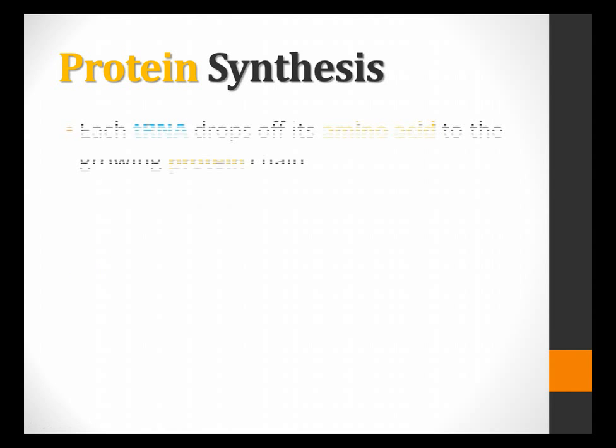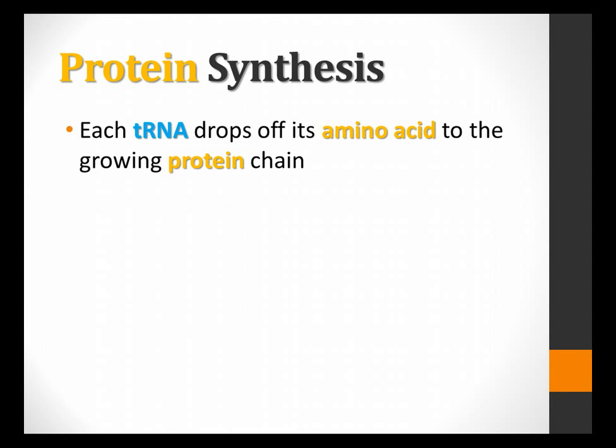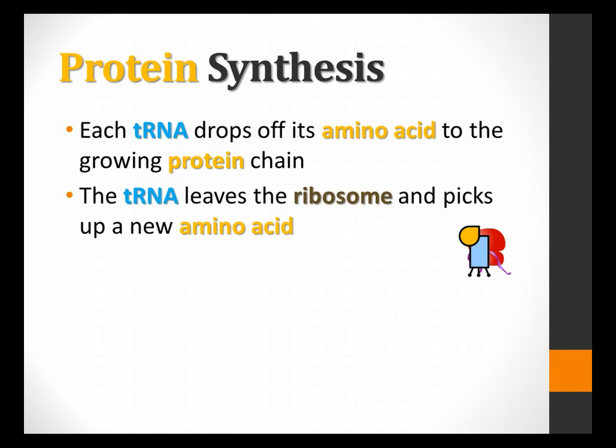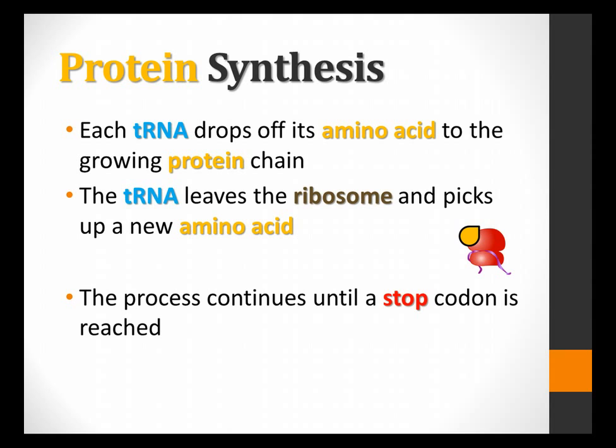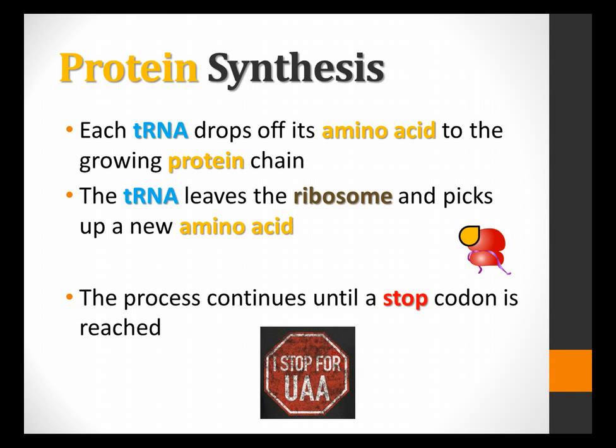Protein synthesis happens via this process. Each tRNA drops off the amino acid to the growing protein chain. So the tRNA goes, drops off the amino acid, and then it will leave the ribosome and go pick up a new amino acid, and that process will repeat. The process continues until it reaches that stop codon, the UAA or the UGA or the UAG. When you get there, it stops. Get it? I stop for UAA. If you wear that, that will be a joke that will be gotten by like 1% of the population, so you'll be like the ultimate hipster.